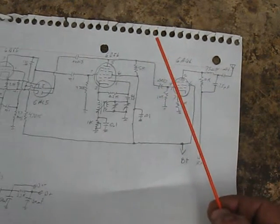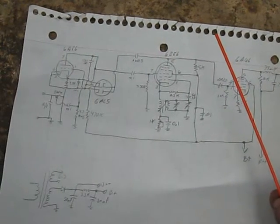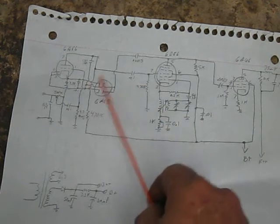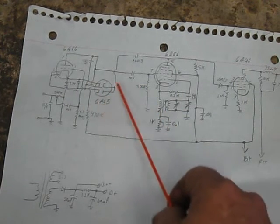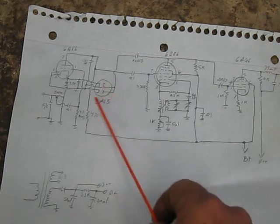200 milliwatts is the max for these that you're allowed, at least in this country. This little bit of arrangement here, the 6AL5, which you could use a couple signal diodes, back to back.